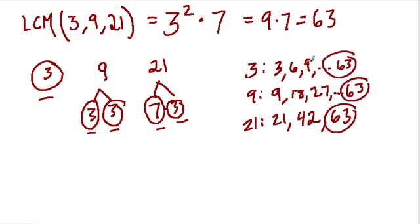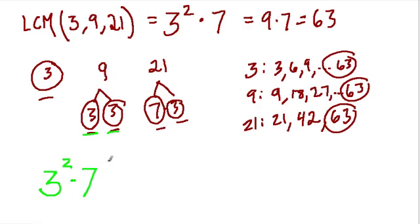All you're doing is, from each number, taking each type of prime factor. The first type of factor was 3, and the most times it occurred within a factor tree was twice — so that's what we use. The second factor type was 7, and the most that occurred was once, so we just take 7 to the first power. This is my favorite strategy for finding a least common multiple.